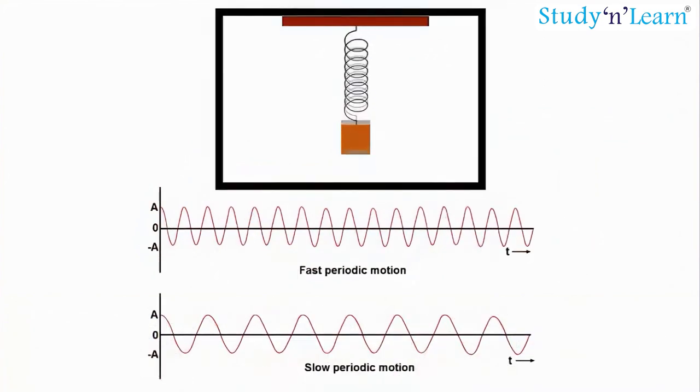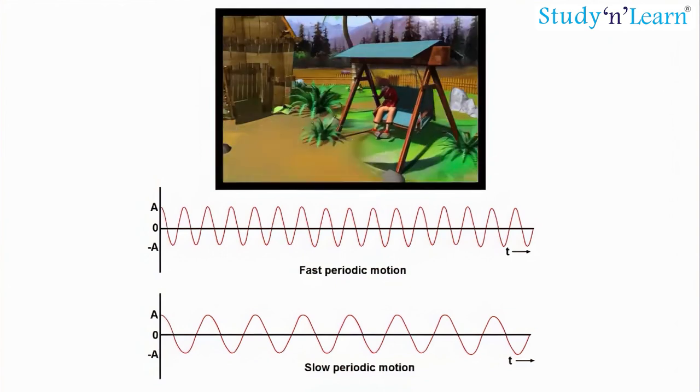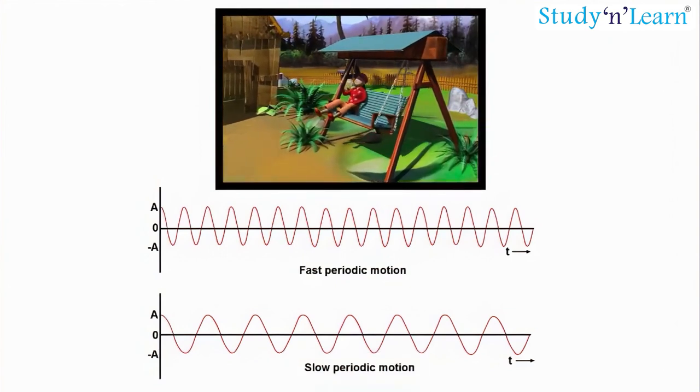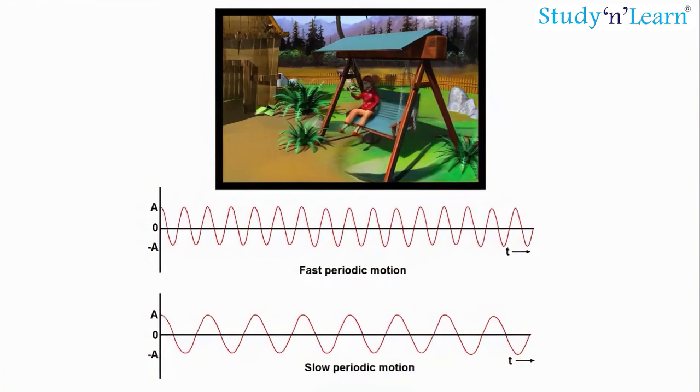For periodic motions which are either too fast or too slow on the scale of seconds, other convenient units of time are used.